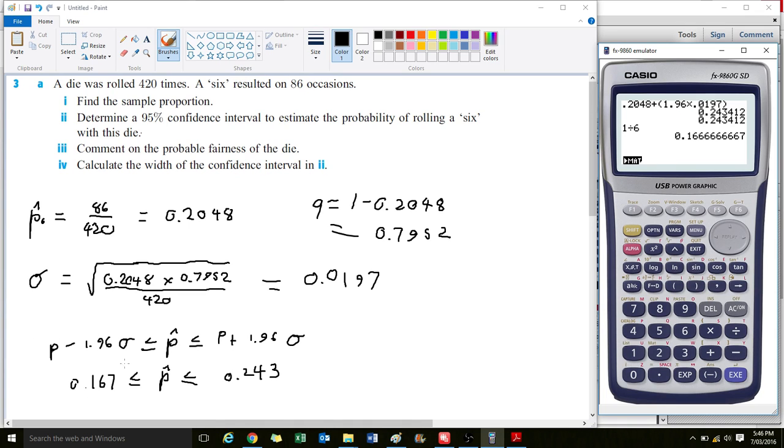That is right on the edge of this confidence interval, which basically suggests the dice is probably fair. It still exists within the confidence interval, and we'd need to increase the sample size to determine otherwise. But at this stage, after 420 samples, the dice is fair.